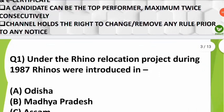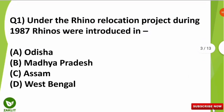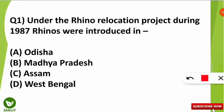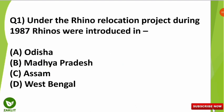Before revealing the results, let's discuss the questions first. The first question was: under the Rhino Relocation Project during 1987 in India, the rhinos were introduced in which of the following states? The correct option is Assam. This is why Assam's Manas Tiger Reserve has a greater number of rhinos in India.